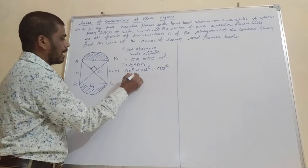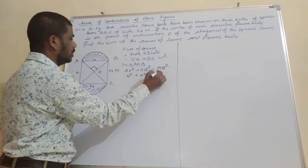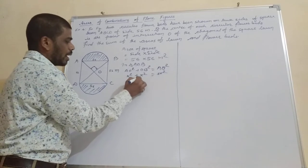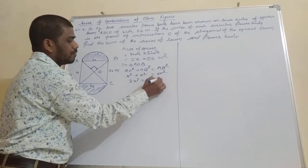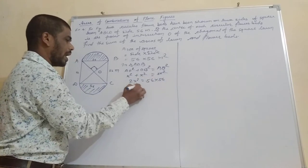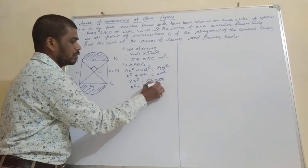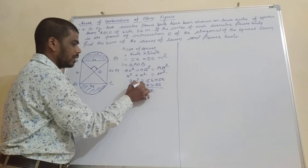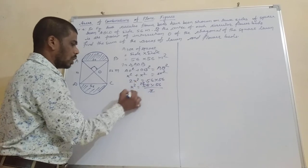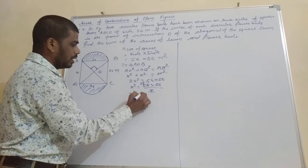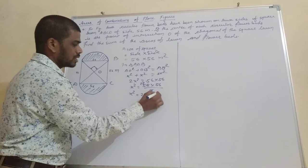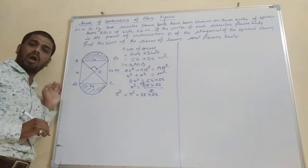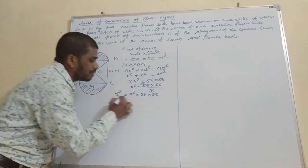So 2X² = 56 × 56, which means X² = (56 × 56) / 2 = 28 × 56. Therefore R² = X² = 28 × 56.